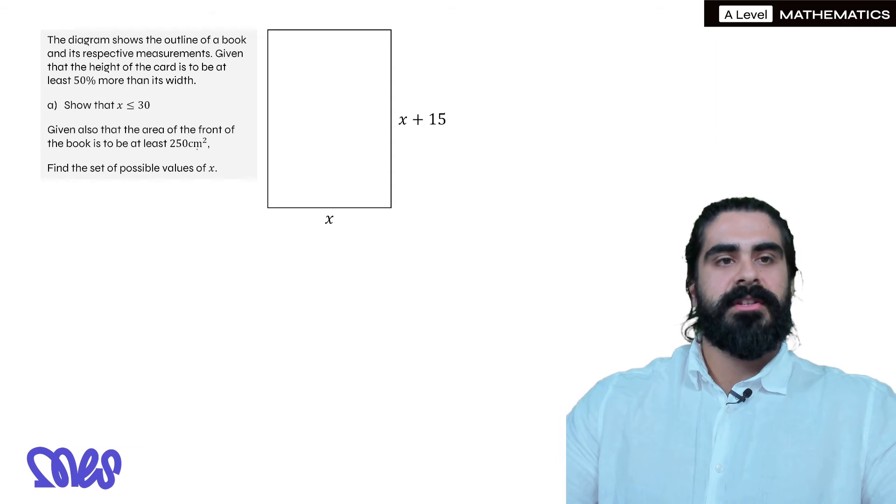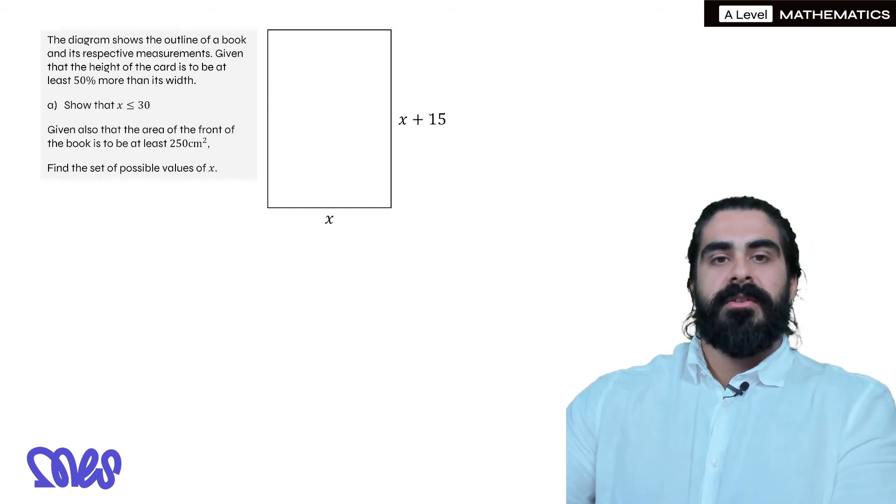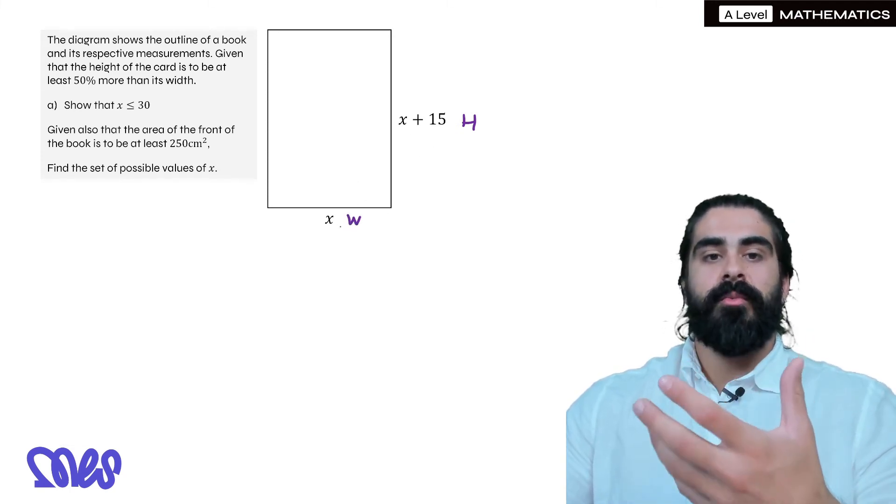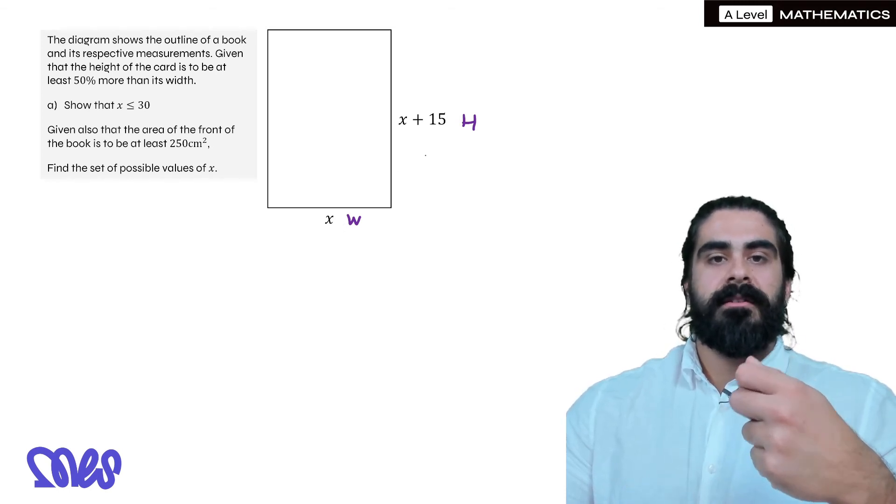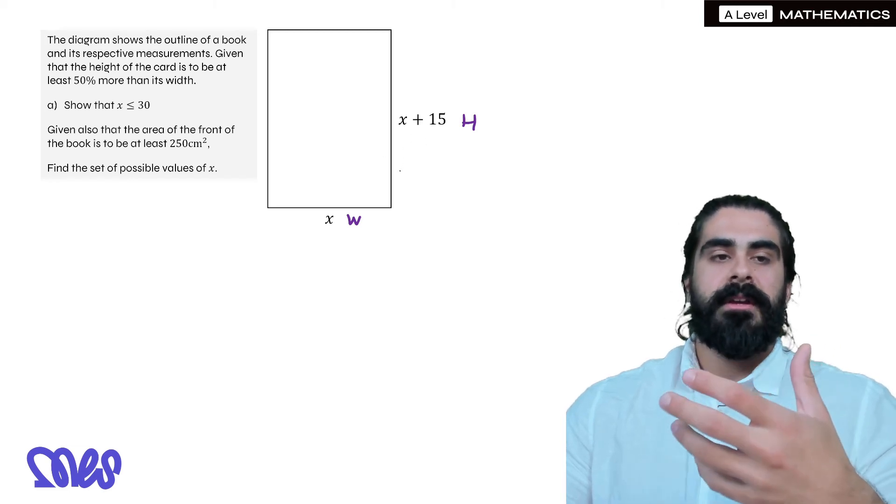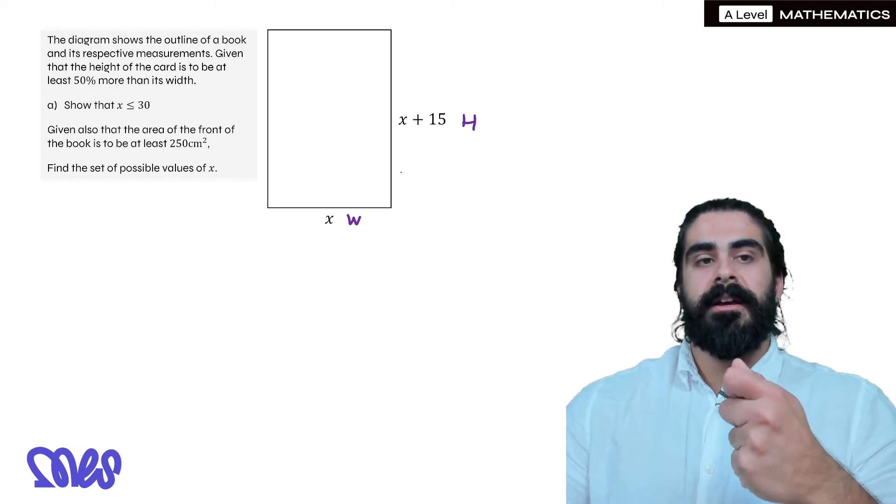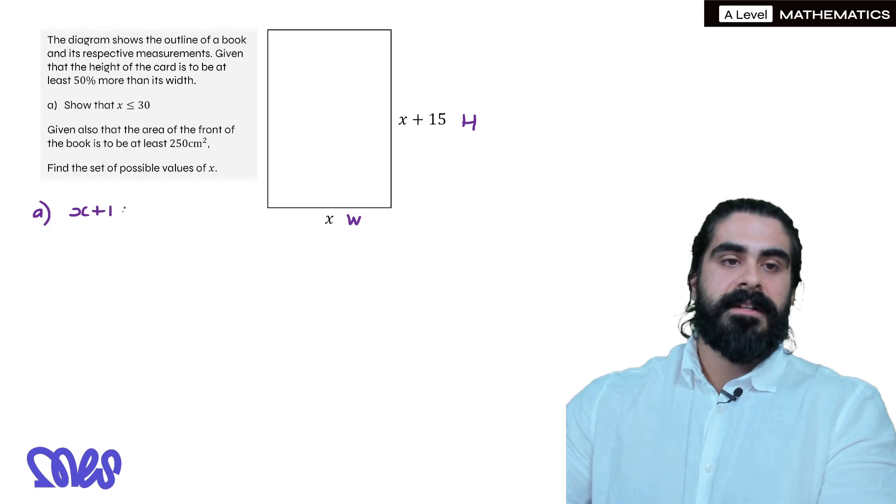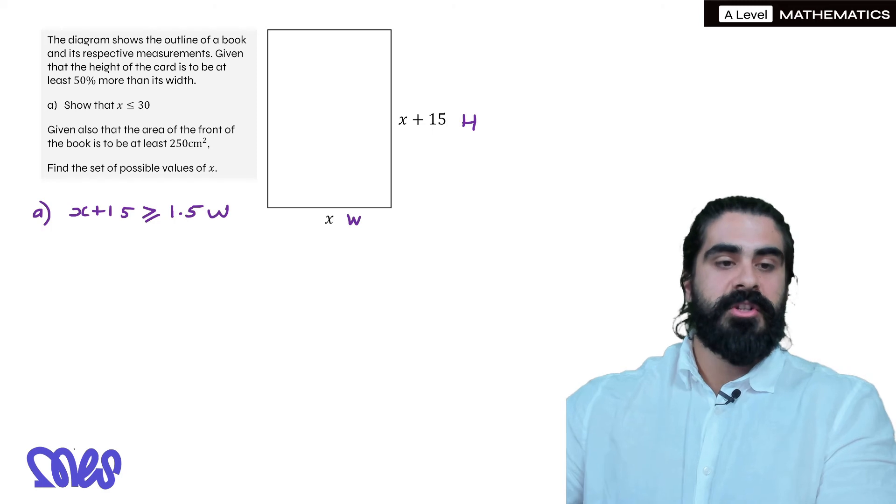A nice modeling style question says the diagram shows the outline of a book and its respective measurements. Given that the height of the card is to be at least 50% more than its width, show that x is less than or equal to 30. So this height has to be 50% more than the width, meaning if you take the width and you increase it by 50%, the height has to be at least that amount. Now if you increase something by 50%, the multiplier is 1.5. So what we're saying is that the height of x plus 15 has to be at least, at least meaning more than or equal to 1.5 lots of the width.